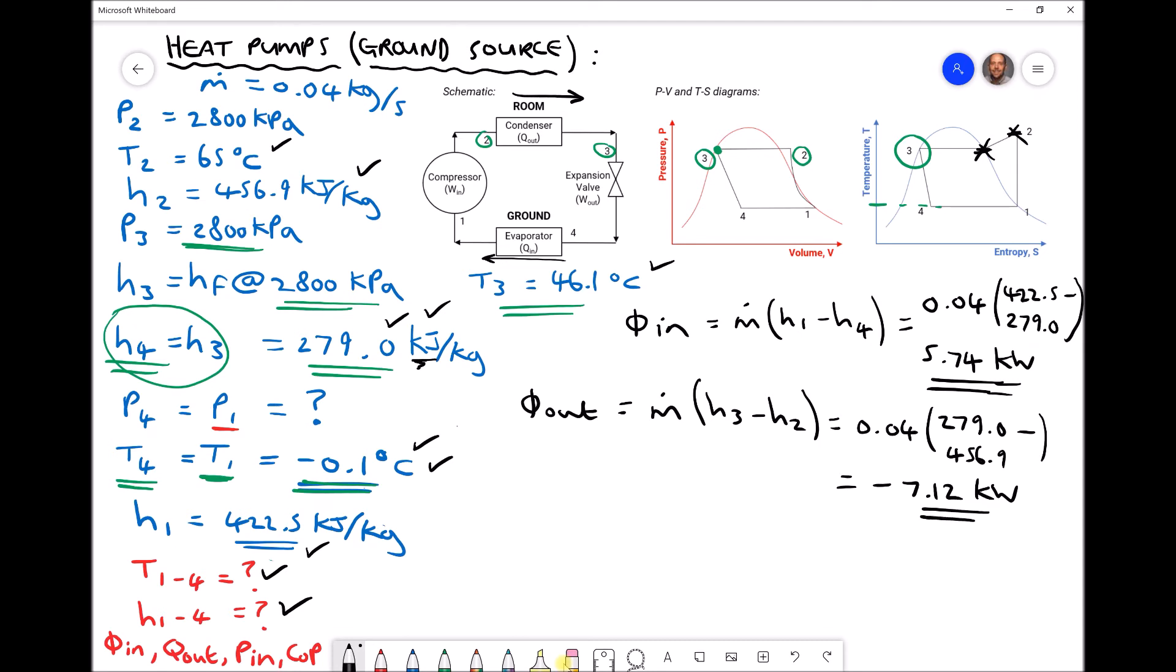Now the only reason it's minus here is because that energy is leaving our working fluid. When we come to doing our coefficient of performance calculation, we'll use the magnitude of that, or the 7.12, because that's the rate of heat energy entering the air as it leaves the refrigerant.